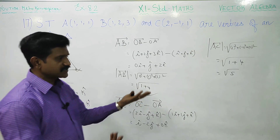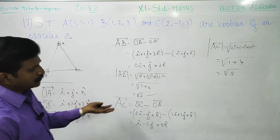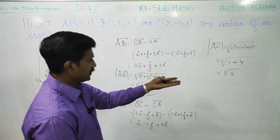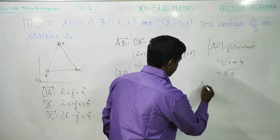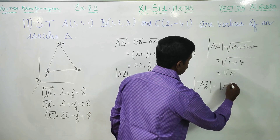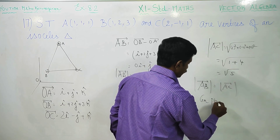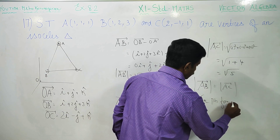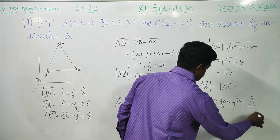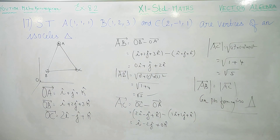For an isosceles triangle, two sides must be equal. We find the magnitude of AB vector equals the magnitude of AC vector — both equal √5. Since two sides are equal, the given points form an isosceles triangle. Isosceles triangle is your final result. Thank you.